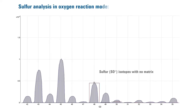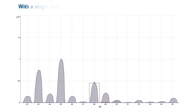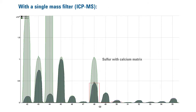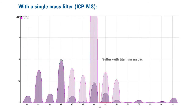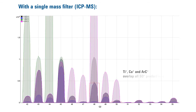For example, when sulfur is measured in oxygen reaction mode, the main isotope, sulfur-32, is measured as a sulfur oxide product ion at mass 48. But SO at mass 48 is overlapped by calcium-48, titanium-48, and an argon-carbon polyatomic ion, so the sulfur result is unreliable if any of these elements is present in the sample.